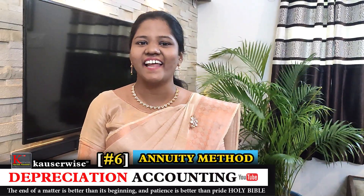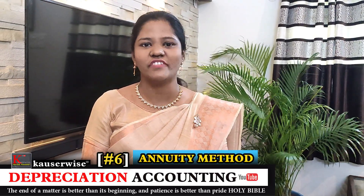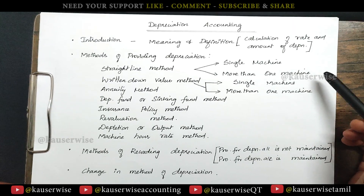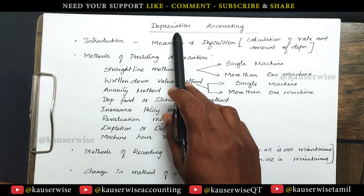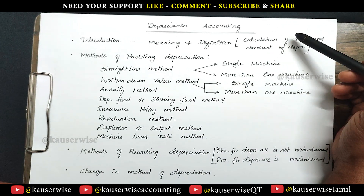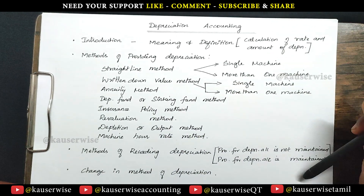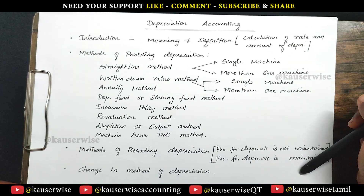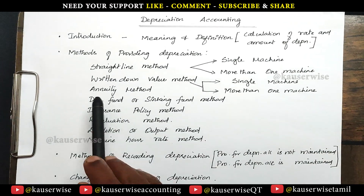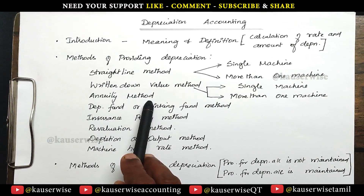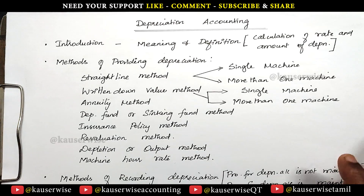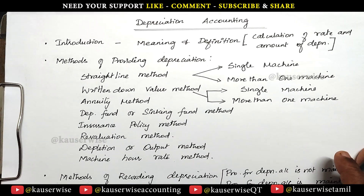Hi, welcome to my channel. This is Kouser Weiss and this is the continuation video of depreciation accounting. Please see the description box to get the link for the entire collection. In this video we are going to see the third method, that is the annuity method of providing depreciation.